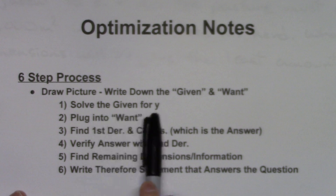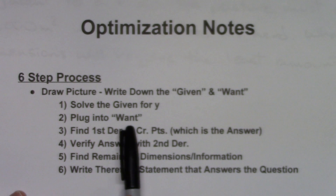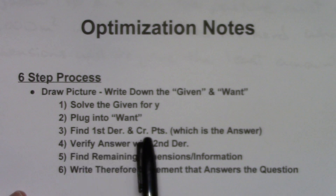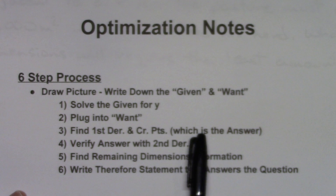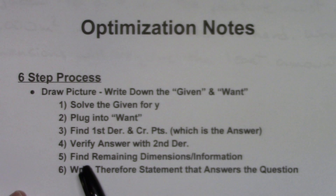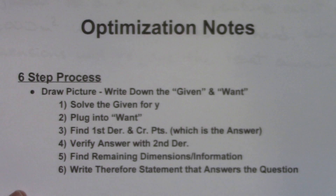The first step: take your given and solve it for Y. The second step: take that answer and plug it into your want. You're going to manipulate that equation so you can eventually take a first derivative and find the critical points. At that point you've honestly found your answer, but you have to verify to make sure it's either a max or a min — whichever you're hunting for. So you'll verify using the second derivative, since that's usually the easier process. Then you'll find any remaining dimensions the story problem needs, and write a therefore statement that actually answers your question.